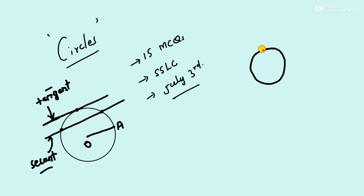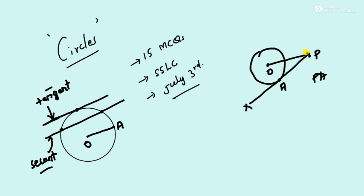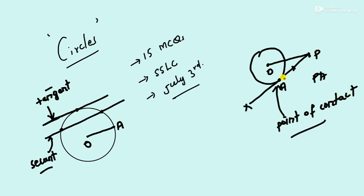Now in tangent — if I draw another circle, this is the center of the circle, and I take an external point P, from P I join O. Now if I draw a tangent from P like this — let me consider this as X — and it is touching at point A. So PA is a tangent from the external point P. This point where the tangent touches the circle, we call it the point of contact.